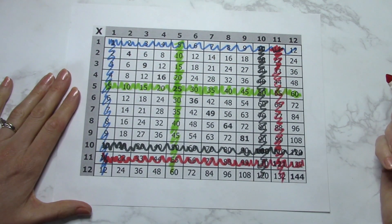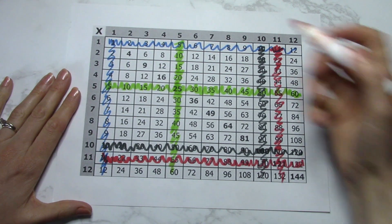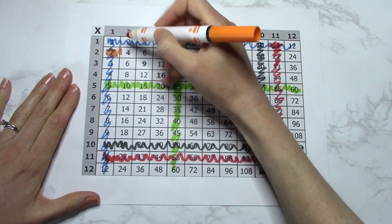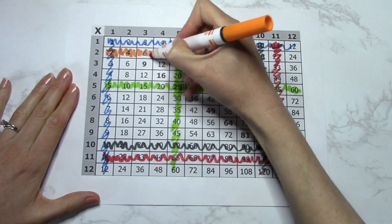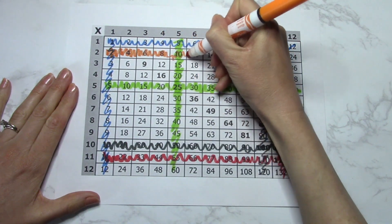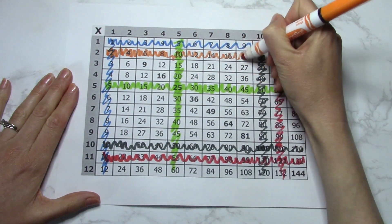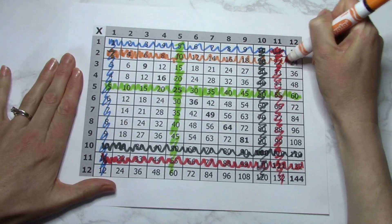Okay, twos. 2 times 1 is 2, 2 times 2 is 4. This seems to be one that if you can count by twos, which I'm sure you can, are much easier. And they're always going to be even numbers, right?